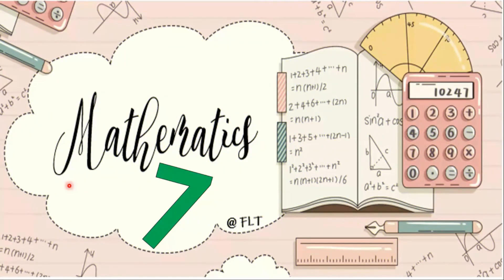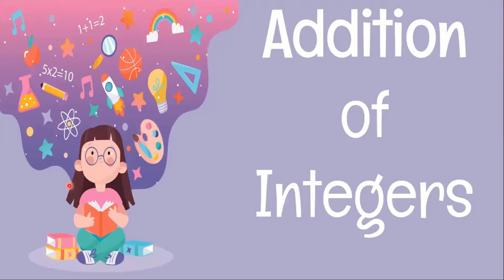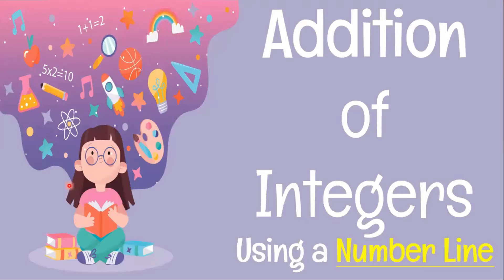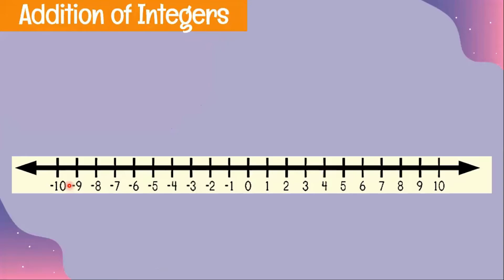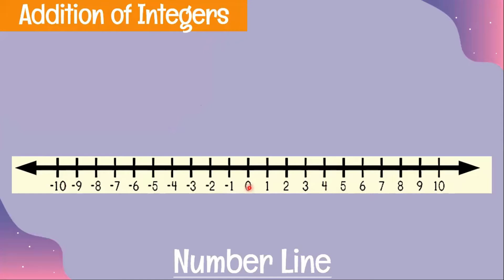Good day, welcome to Mathematics 7. Today we're going to discuss addition of integers using a number line. A number line consists of zero at the middle, with positive numbers to the right and negative numbers to the left.